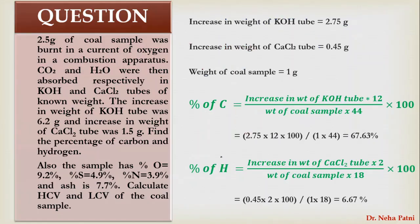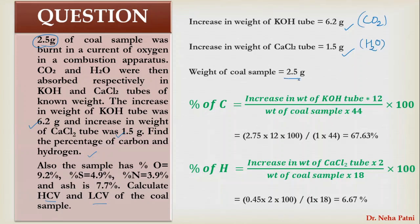For a more advanced problem: the coal sample is 2.5 grams. CO₂ and H₂O are absorbed and the increase in weight of the KOH tube is 6.2 grams and of the CaCl₂ tube is 1.5 grams. Find the percentage of carbon and hydrogen. Additionally, the fuel composition is given and you are asked to find HCV and LCV of the coal sample. First, write the increase in weight of KOH (corresponding to CO₂ formed) and increase in weight of CaCl₂ (corresponding to H₂O formed), then apply the formula: % C = 6.2 × (12/44) / 2.5 × 100, and % H = 1.5 × (2/18) / 2.5 × 100.